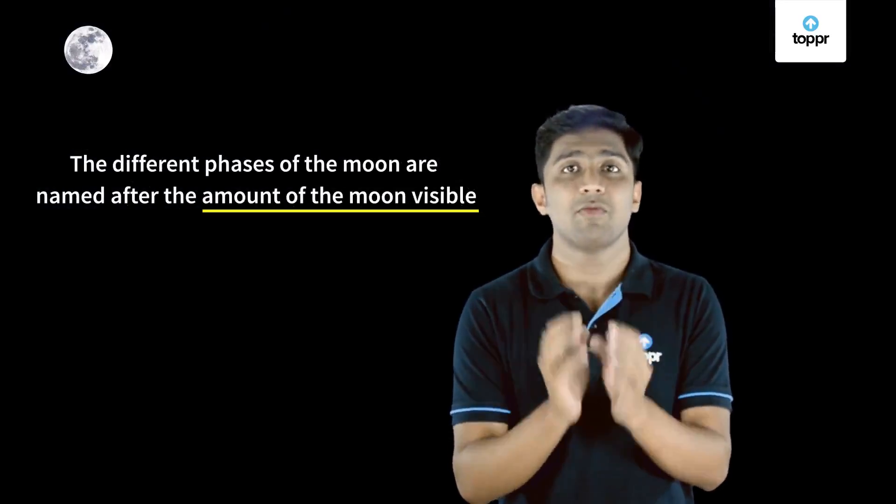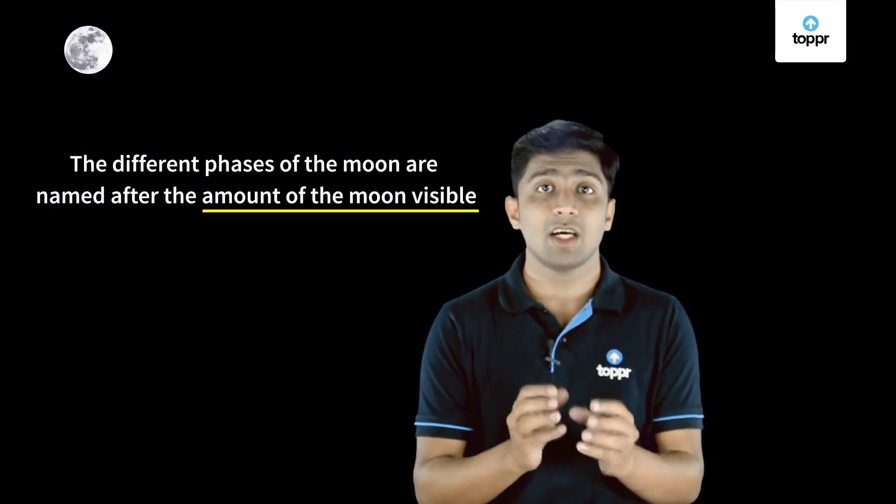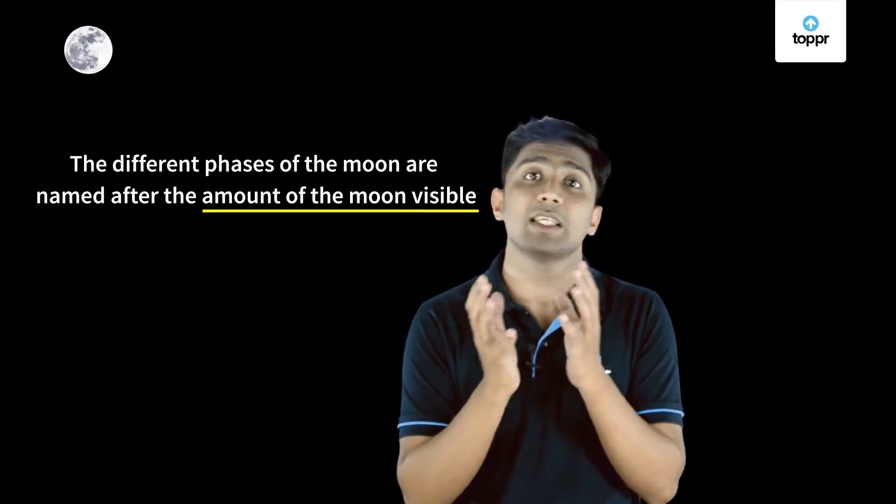The phases of the moon depend on the moon's position in relation with the earth and the sun. As the moon makes its way around the earth, it appears in different shapes, which means at different angles. These are called phases of the moon. The phases of the moon are named after how much of the moon is visible, which is increasing or decreasing each day. Now you may be wondering — what are those different names of the phases of the moon? Let's see.